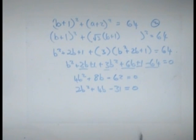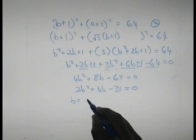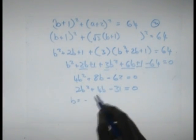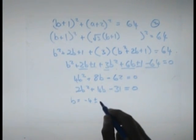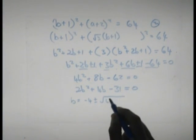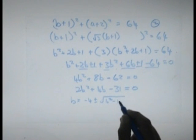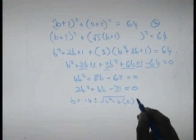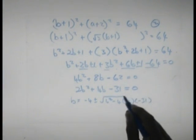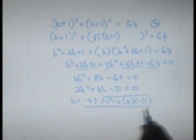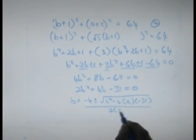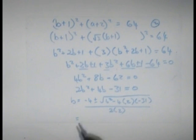I'm going to say that b is equal to minus b or minus 4 plus minus square root of b squared minus 4ac. By now you should be quite familiar with using the quadratic formula so I'm not going to spend too much time on it.